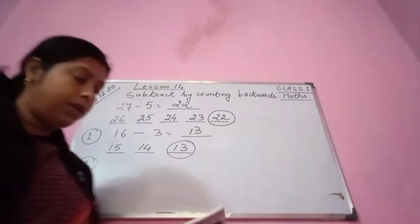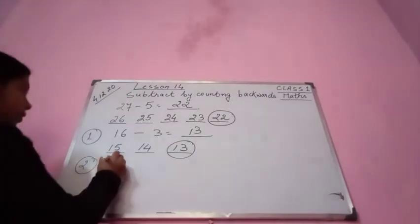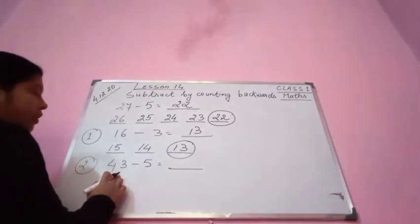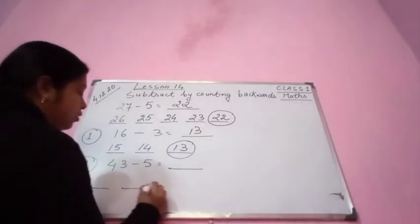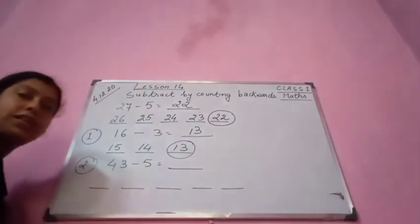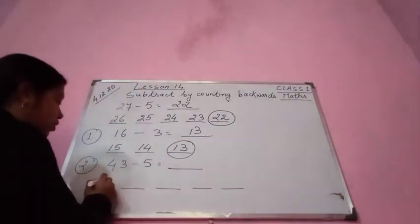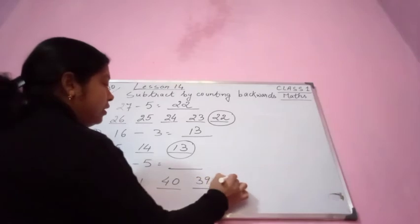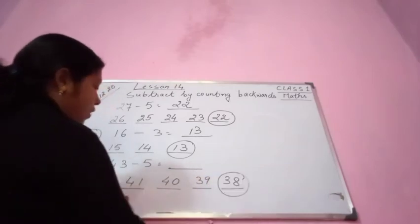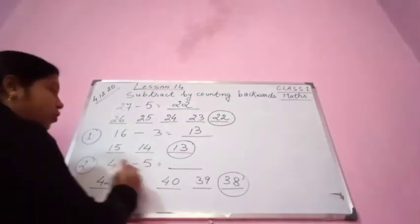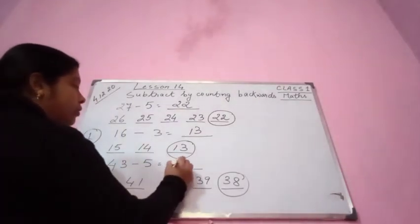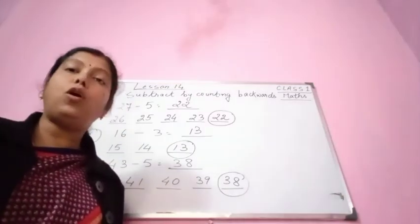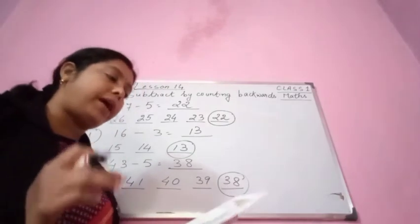Number 2 is 43 minus 5. 43 minus 5 equals how much? Before 43, we have to go 5 places: 1, 2, 3, 4, 5. What is before 43? It is 42, 41, 40, 39, 38. Stop here — 38. We have already given the blanks from beforehand, so there is no confusion. 43 minus 5 equals 38. In this way, we are going to go backwards. This is subtract by counting backwards.